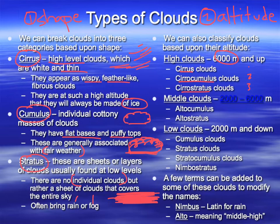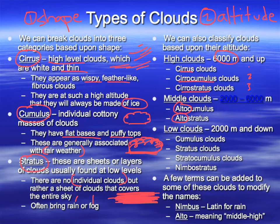For medium level clouds we add the prefix 'alto.' Alto is a prefix meaning medium high — if you know band or choir, the alto voice is the lower portion of the female voice, so kind of medium high. Similarly, the alto saxophone is a medium-high version. So we have altocumulus clouds — a medium high cumulus cloud — and altostratus, a medium high level cloud.